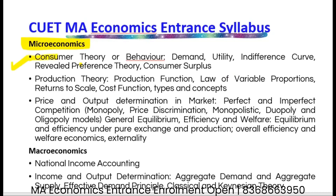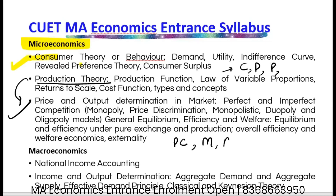The second part is producer theory, which covers cost, production, profit, and types of producers in the market - meaning perfectly competitive market, monopoly, monopolistic market, duopoly - and that leads to game theory. Finally, you will have topics like general equilibrium, efficiency and welfare. These are the topics from microeconomics.